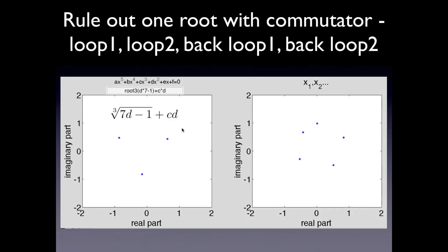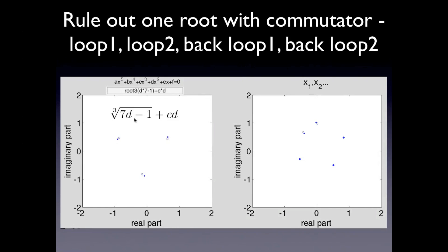Now we start facing our main challenge, which is expressions that involve roots. Here is a particular actual numerical example of a fifth degree polynomial equation, and this is a candidate expression for the solutions that has a third order root involving the coefficients. Since we have this root, this expression in principle gives three different results. And when we follow a loop, as you can see, the results don't necessarily return to themselves.